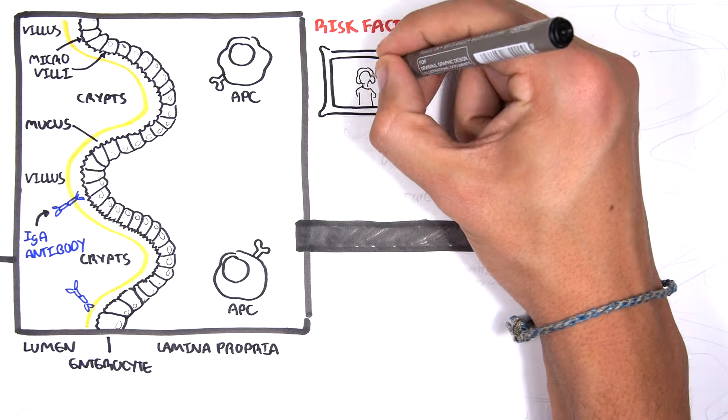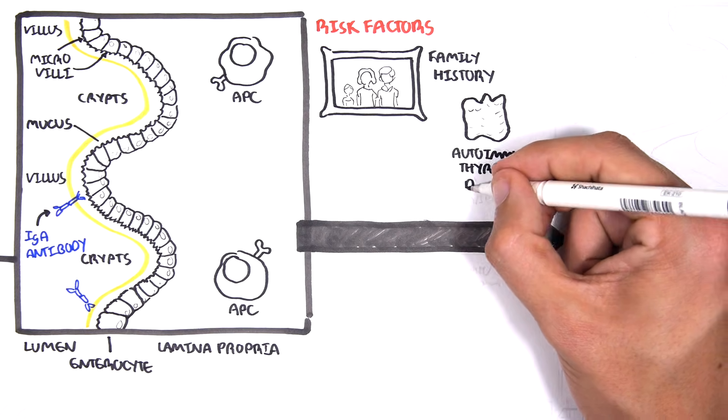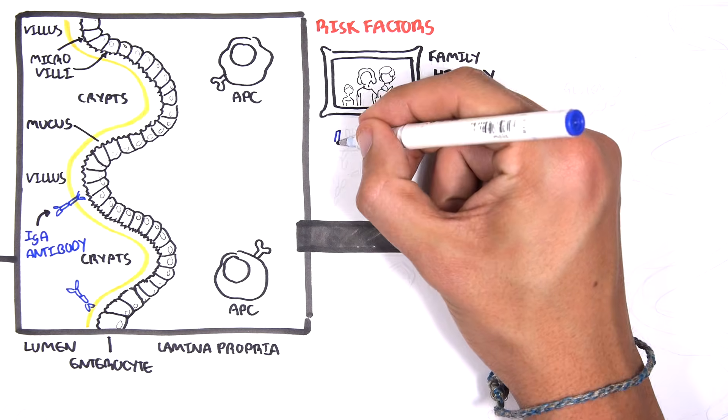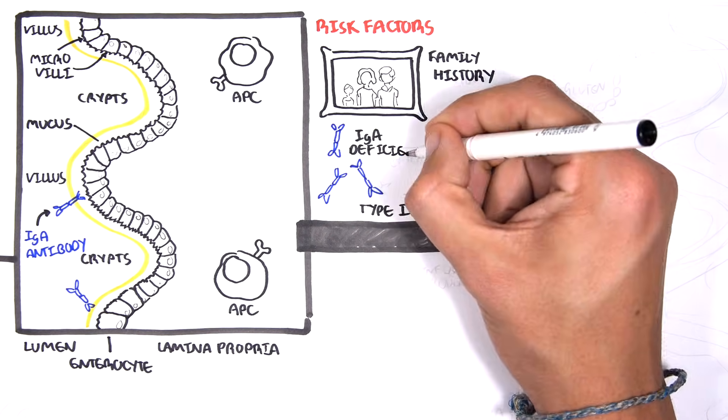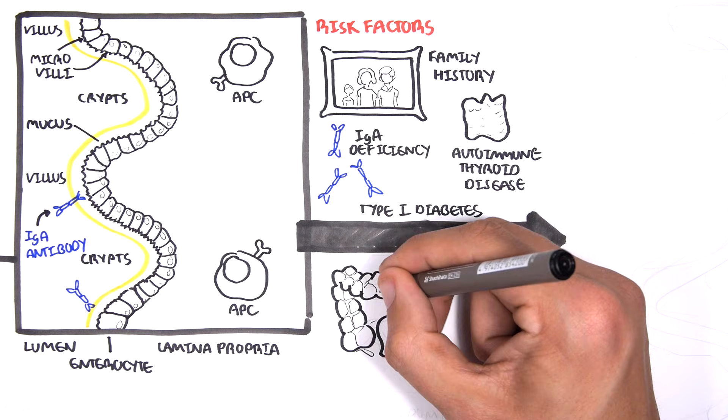These risk factors include having a family history of celiac disease, autoimmune thyroid disease, type 1 diabetes, IgA deficiency, and inflammatory bowel disease.